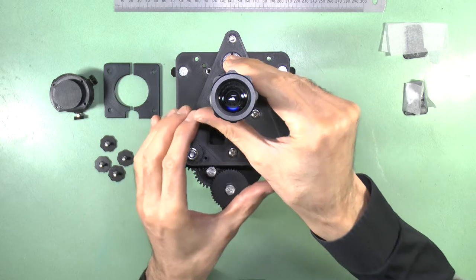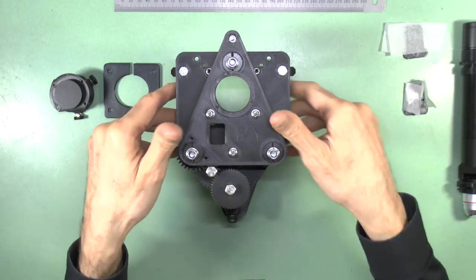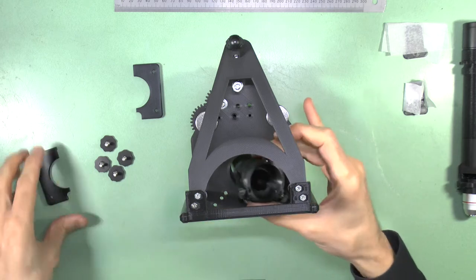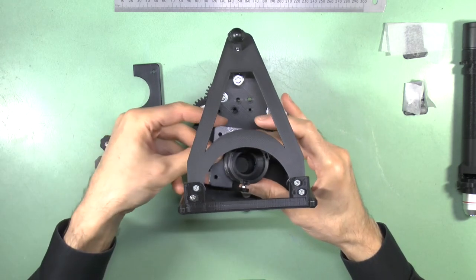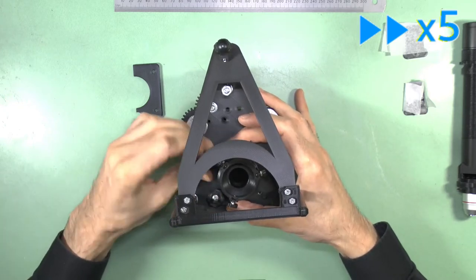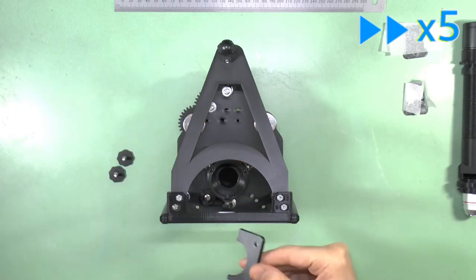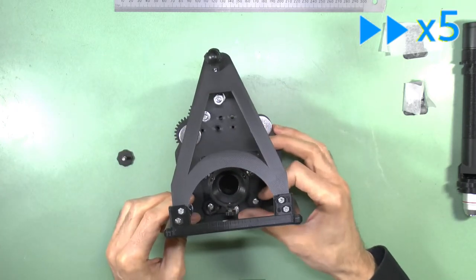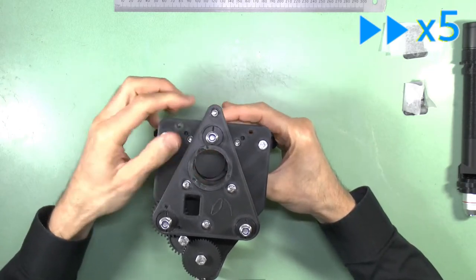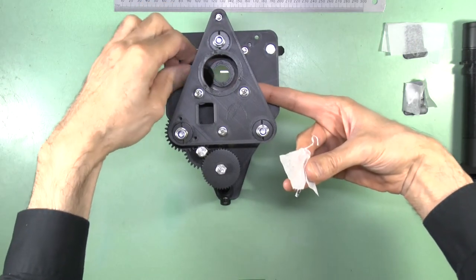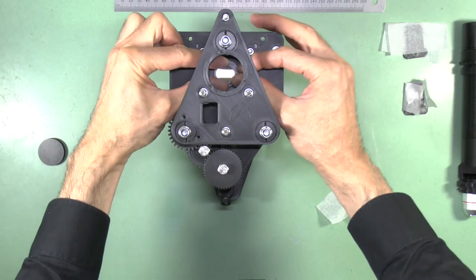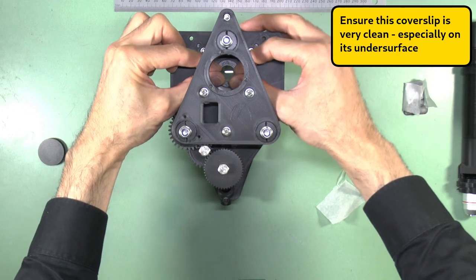We now have all the components we need for transpolarization, so we must fit them to the microscope. Fitting the below-stage components has already been described in the video on the Abbe condenser, so see that video for details. Once the polarizing condenser is attached, insert an 18-millimeter diameter round glass coverslip into the well on the top of the polarizing condenser to protect the polarizer from falling debris during use.